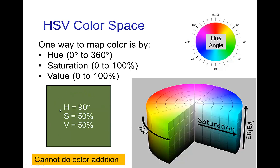And then finally value with zero being the darkest and hundred percent being the brightest. This green swatch here would be an example of a hue at a ninety degree angle, fifty percent saturation, fifty percent value. Now this is very convenient for mapping single colors, the only reason we don't use it more is that we can't do color addition using this type of diagram. For color addition we need the CIE diagram that we've been using.